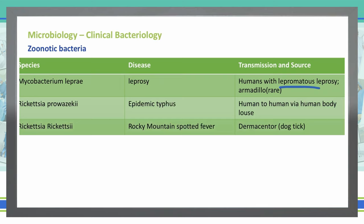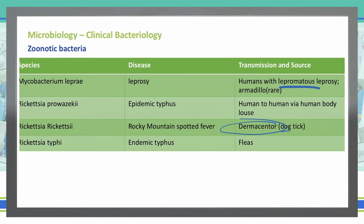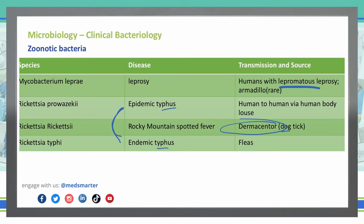Rickettsia rickettsii causes Rocky Mountain spotted fever, coming from the dog tick, known as Dermacentor. Rickettsia typhi causes endemic typhus, as compared to the epidemic typhus of Rickettsia prowazekii. Remember that both cause typhus, but different types — endemic versus epidemic. Rickettsia typhi comes from fleas.